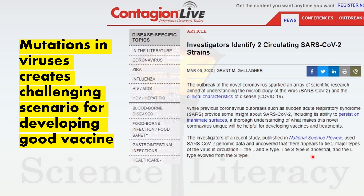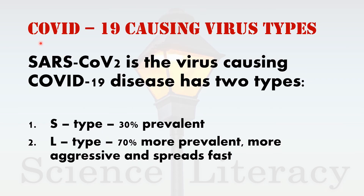The S type is ancestral and the L type evolved from the S type. This situation is quite alarming as mutation in viruses creates a challenging scenario for developing a good vaccine. The challenging issue is that the COVID-19 causing virus evolved into two types. Both differ in their prevalence and infectivity. S type is 30% prevalent and L type is 70% more prevalent, more aggressive and spreads fast.